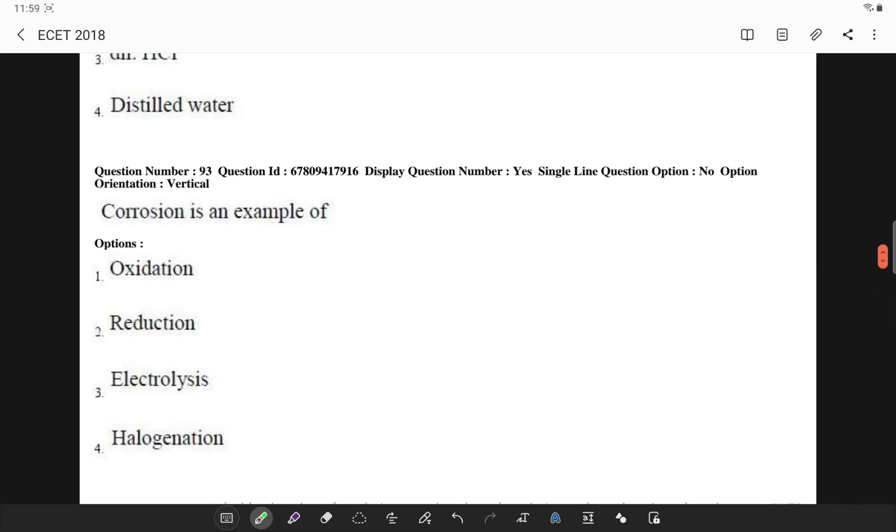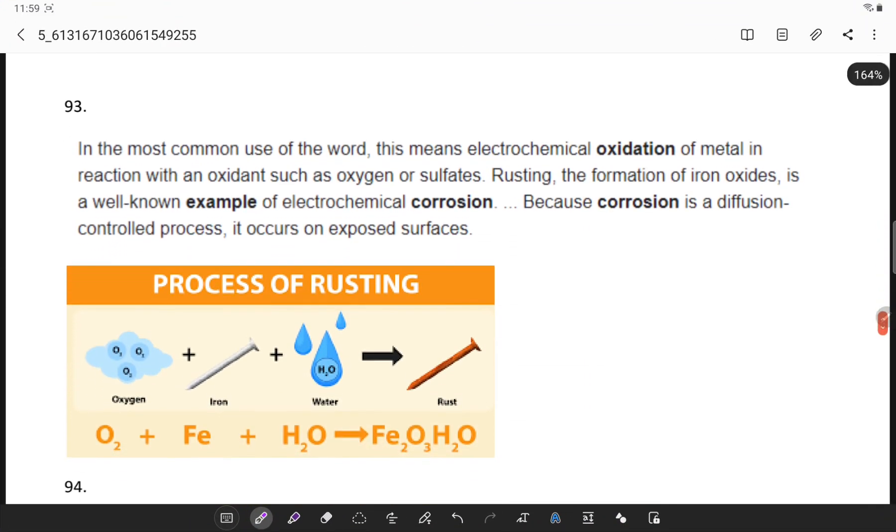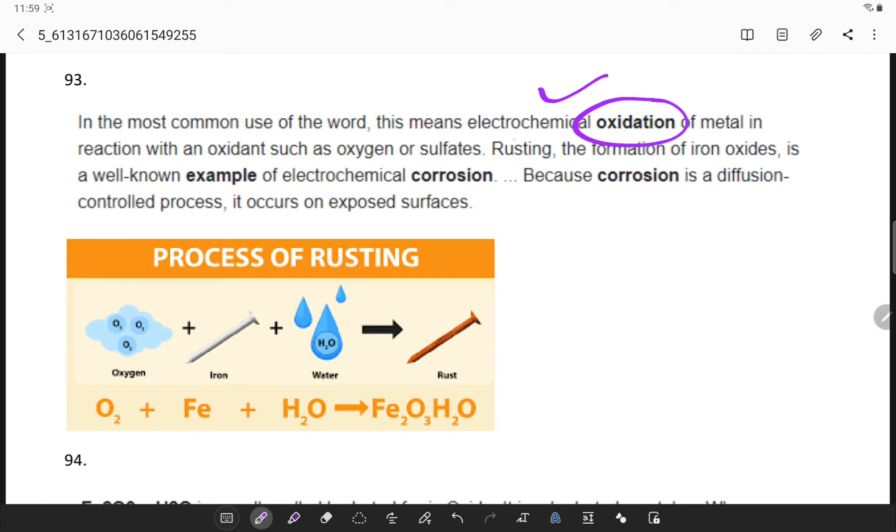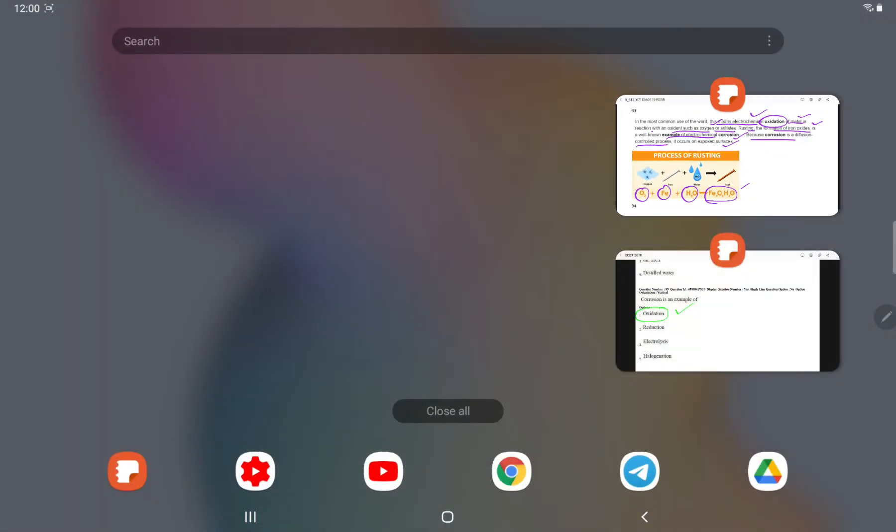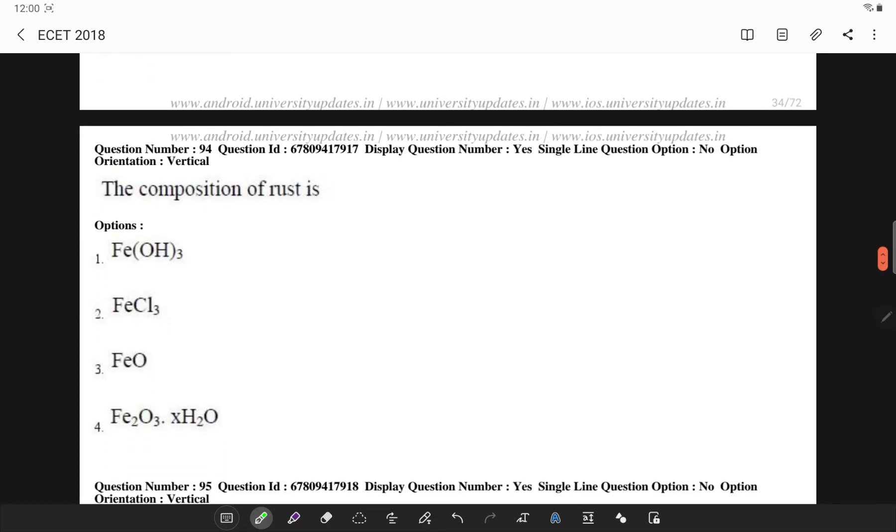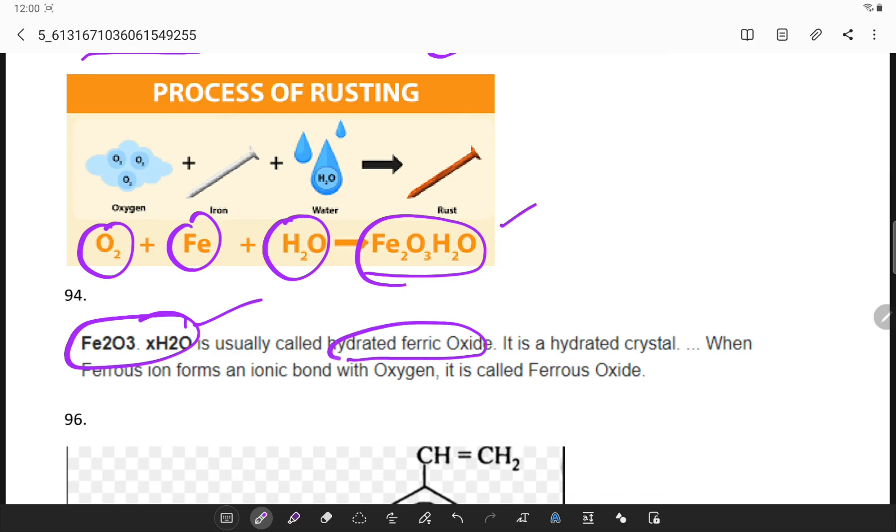What exactly is corrosion? Corrosion is an example of oxidation. Rusting is a process which happens. This is an electrochemical oxidation of a metal in a reaction in which oxidants such as oxygen or sulfates. Rusting is the formation of iron oxide and it is an example of electrochemical corrosion because corrosion is a diffusion control process and it occurs at exposed surfaces. Oxygen with iron along with water will produce Fe₂O₃·H₂O. What exactly is the composition of rust? As earlier said, it is Fe₂O₃, iron oxide with water.